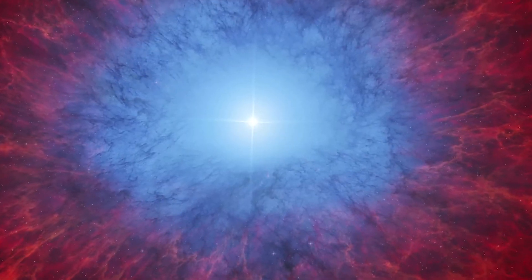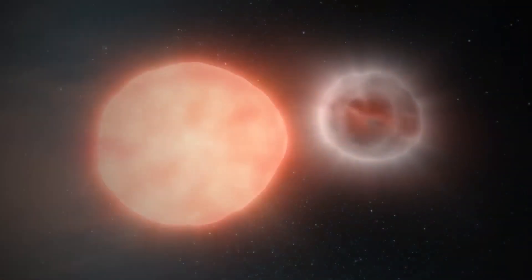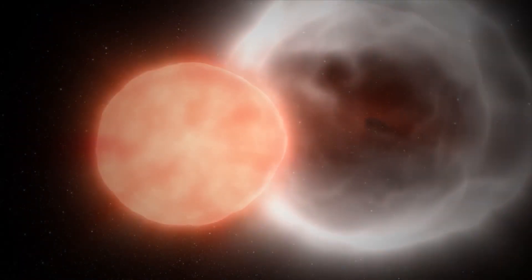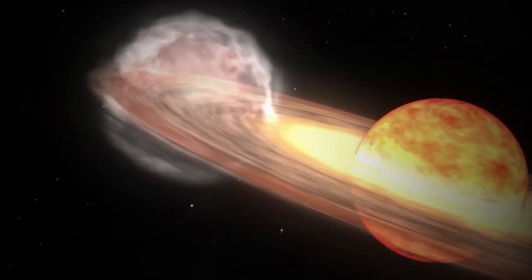But I know what you're thinking. Why this 80 year cycle? Well, it's about the balance between that greedy white dwarf and its red giant companion. You see, it takes time for the white dwarf to slurp up enough gas from the red giant to trigger the explosion.